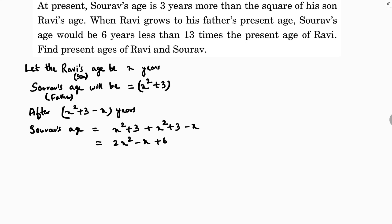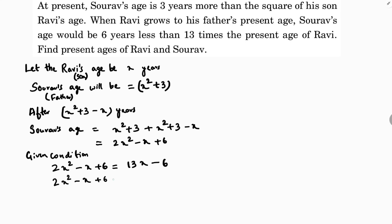So Saurav's age after the increase of X squared plus 3 minus X years is 2X squared minus X plus 6. The given condition is that Saurav's age would be 6 years less than 13 times the present age of Ravi. Present age of Ravi is X, so 13 times X minus 6. Setting up the equation: 2X squared minus X plus 6 = 13X minus 6, which simplifies to 2X squared minus 14X plus 12 equals 0.